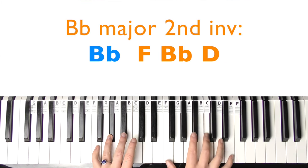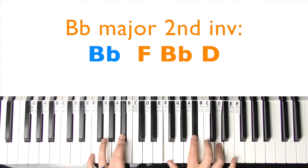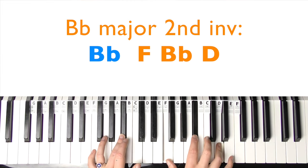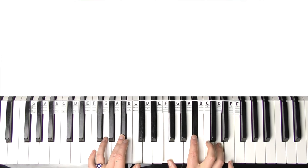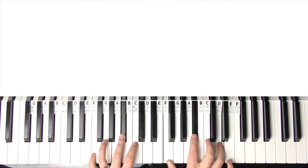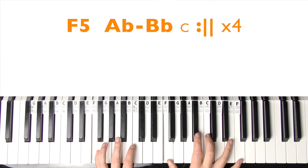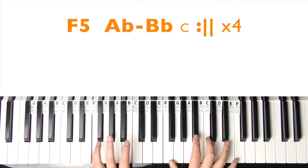And then we have a B-flat major chord, second inversion. B-flat in the left hand, in the right hand that's F, B-flat, and D. And then you just play a C at the end of that. You can play C's together if you wanted to. So far we have... repeat it.